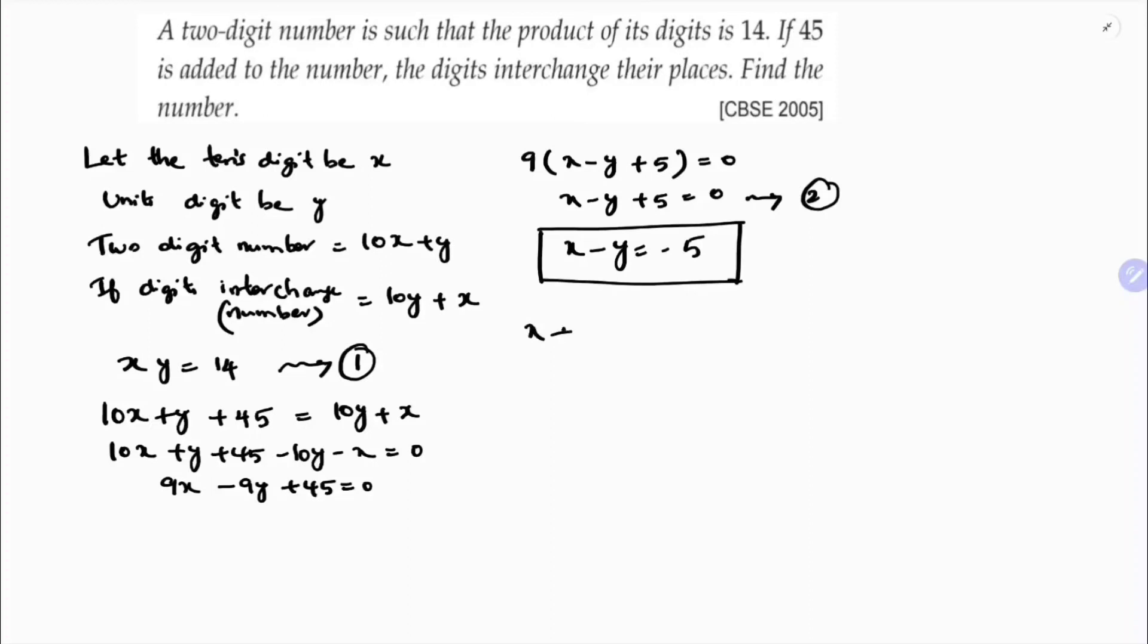Now I want x plus y value. So I will use x plus y whole square equals x minus y whole square plus 4xy. Because here you will get minus 2ab plus 4ab, you will get plus 2ab. So x minus y is minus 5, xy is 14. So x plus y whole square equals 25 plus 56, 81. x plus y equals root 81, which is plus or minus 9.